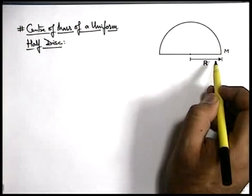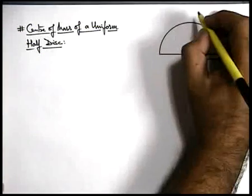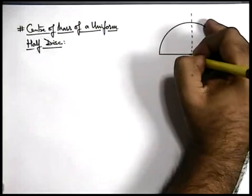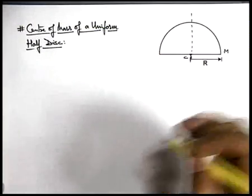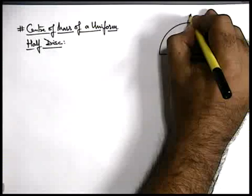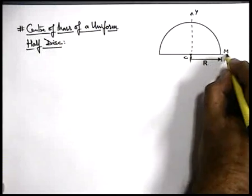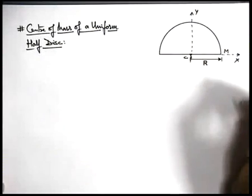By symmetry we can state that its center of mass will be located somewhere on the vertical line passing through its center. If we consider this vertical line as y-axis and its horizontal diameter as x-axis.